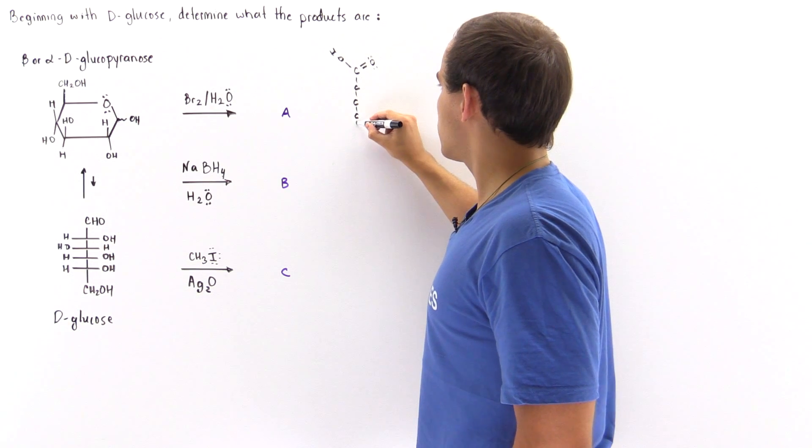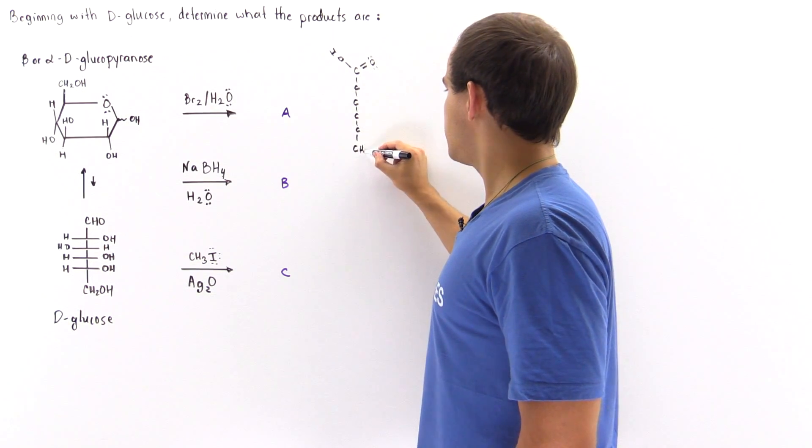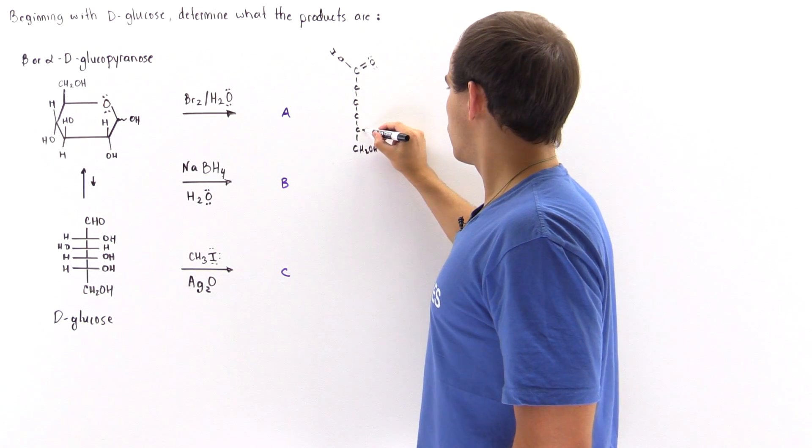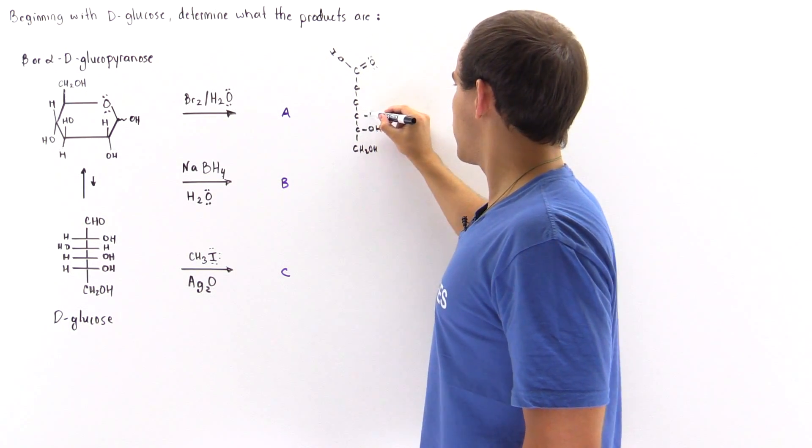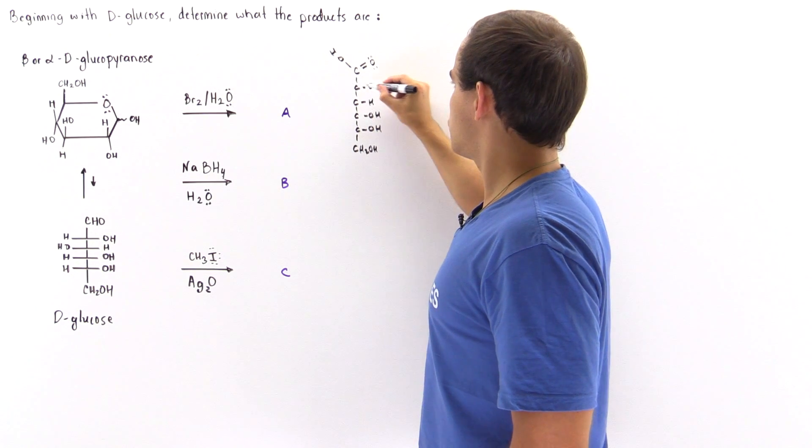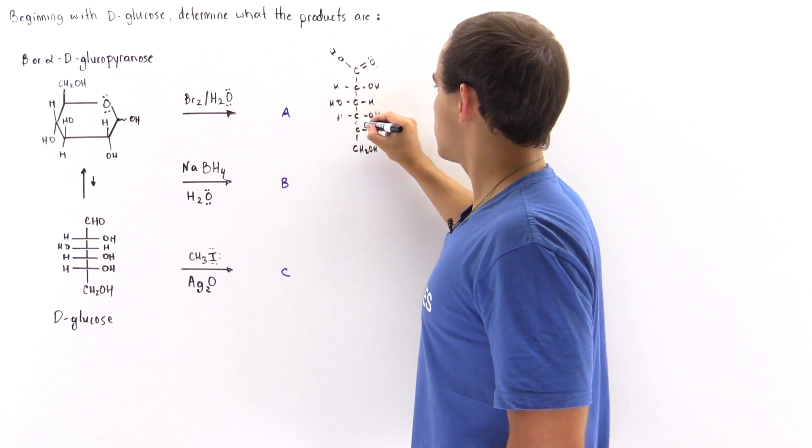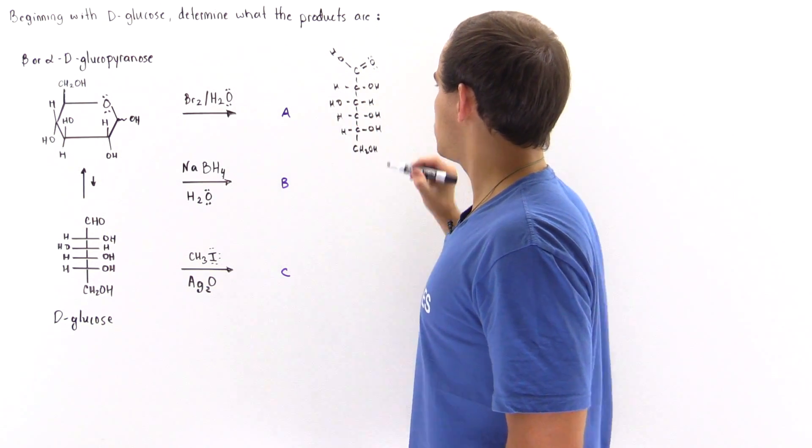So we have CH2OH, we have OH, we have OH, we have H-O-H, and then H on this side, OH on this side, H here and H here. So basically this is the product of this reaction.